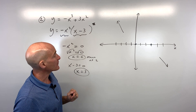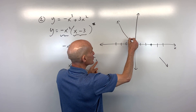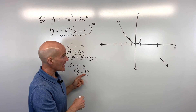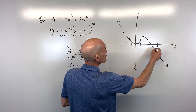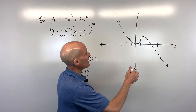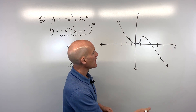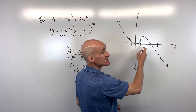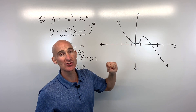Now the multiplicities: at x equals 0, the multiplicity is 2, so the graph has a parabola shape there — it bounces off. At x equals 3, the multiplicity is 1, so the graph passes straight through like a line. This gives us a basic sketch. You could add more points between the zeros for a better sketch, but this covers the three key components.